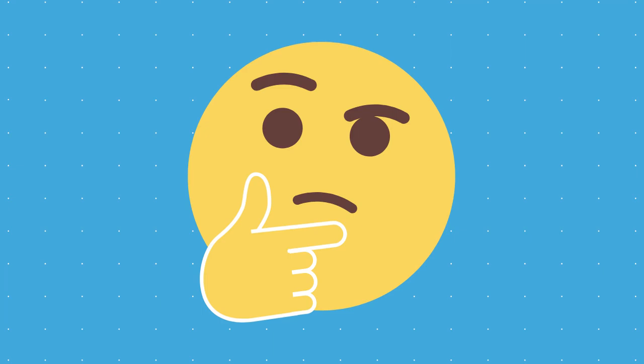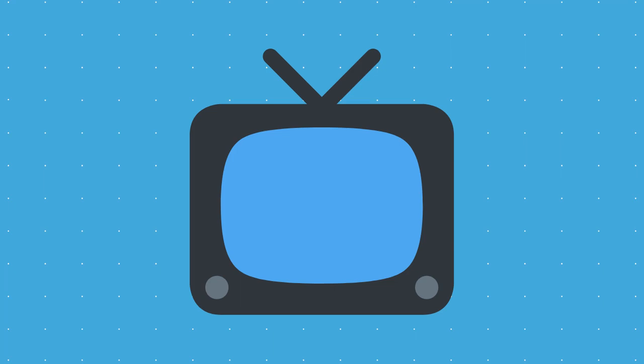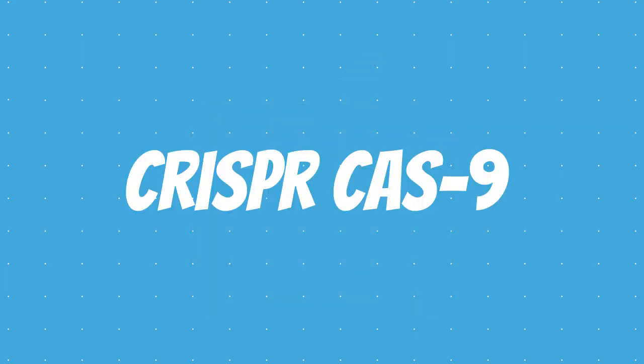Imagine a world where we could directly edit an individual's DNA and prevent hereditary diseases. This may seem like something straight out of a movie, but I'm about to tell you something that will shock you. It's happening today, in real life, and it's all thanks to CRISPR-Cas9.